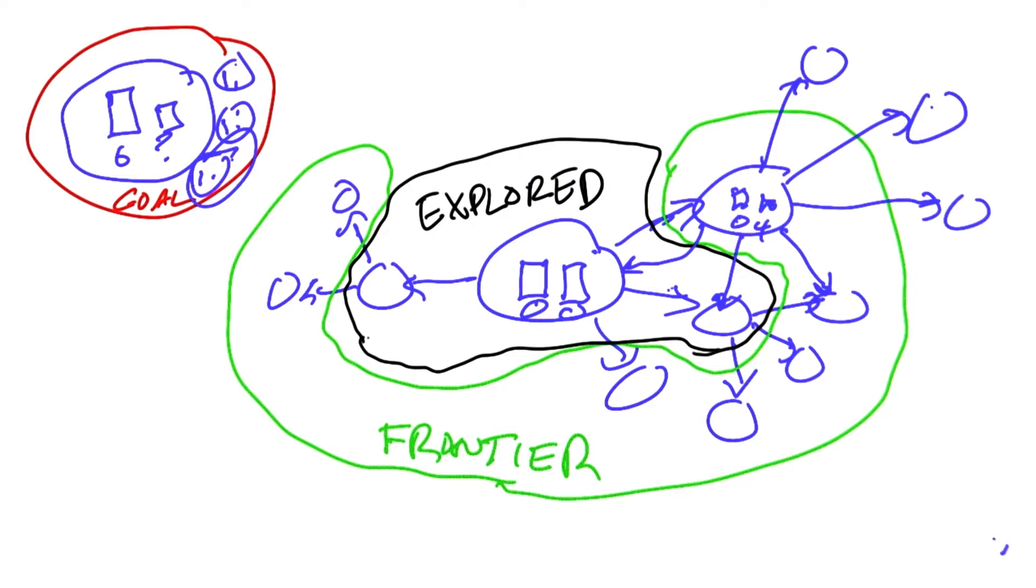Now, in exploration problems like this, there's two problems that we have to worry about. One problem is that there's no solution at all, that the goals are not connected to the start state, so there's no path from here to there. Then what we want to do is do the exploration we need and report back that it's impossible. We want to find out that it's impossible.